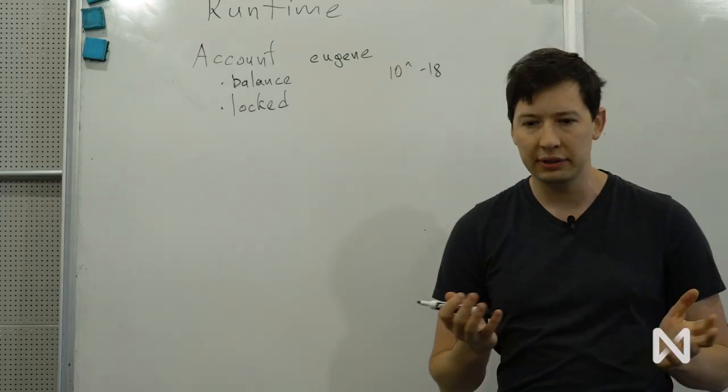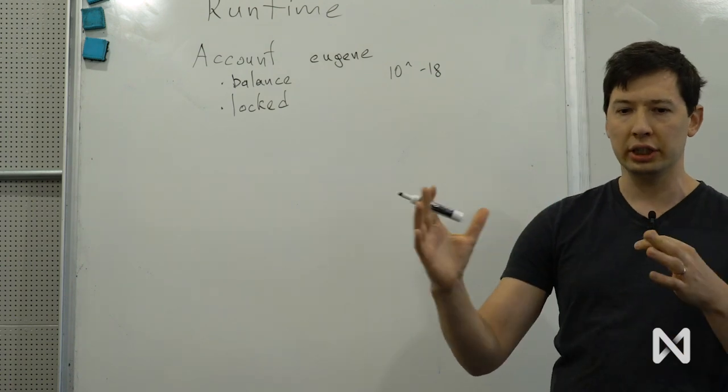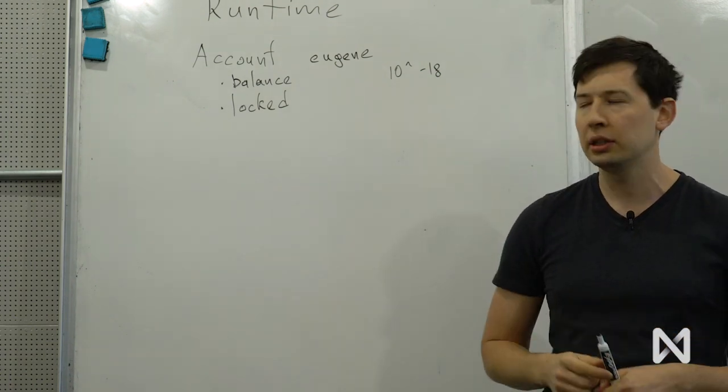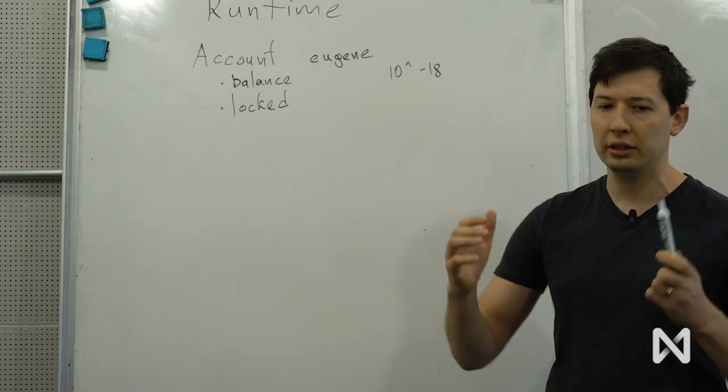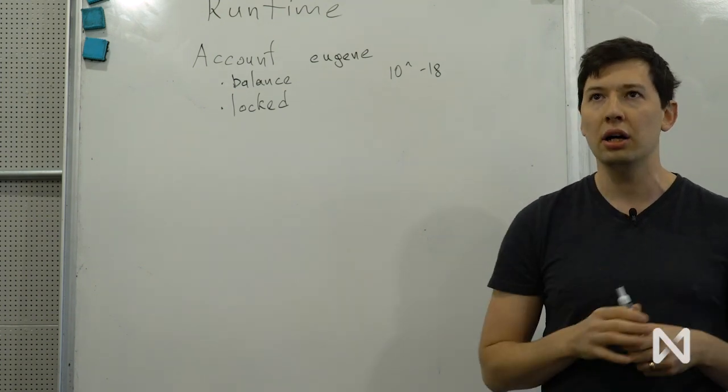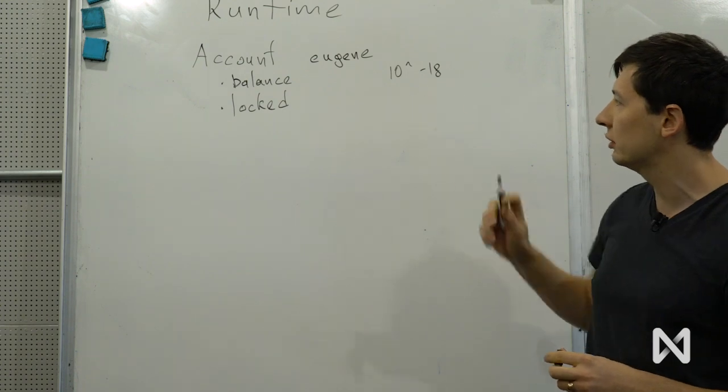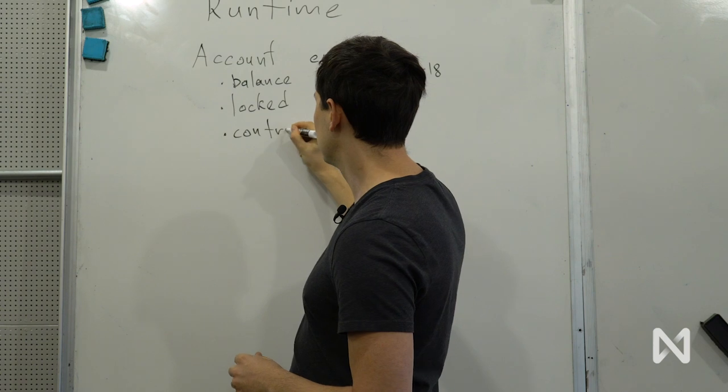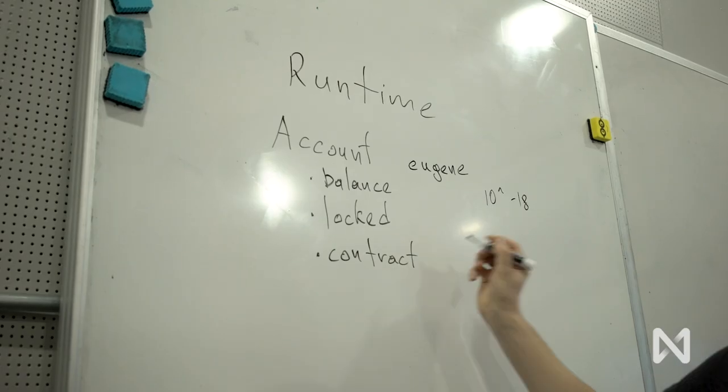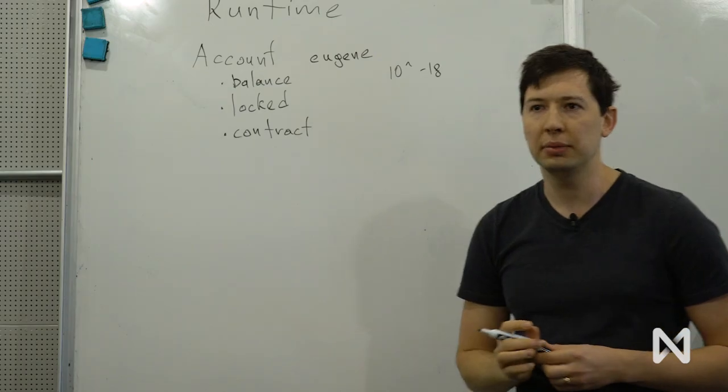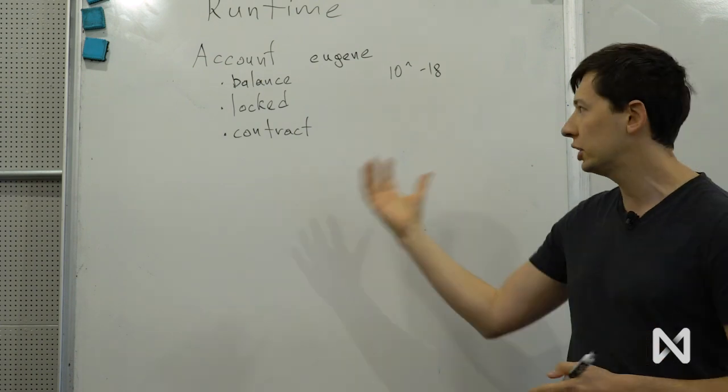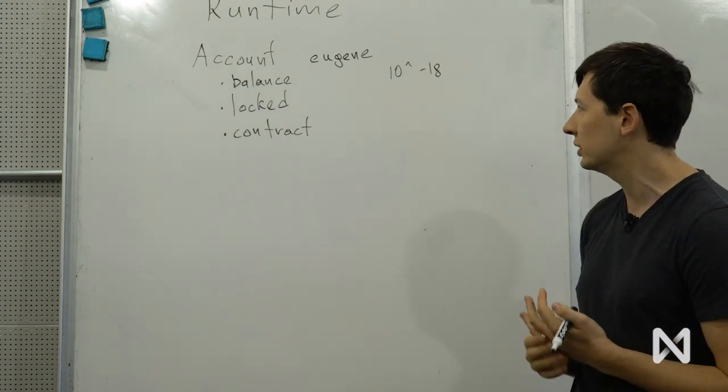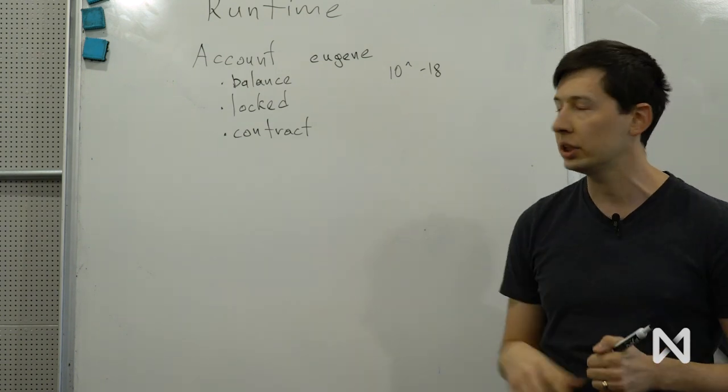Also on account, on every account, we may have a contract. This is a code, a contract, a smart contract that can act on your behalf, on behalf of the account. So you said on every account we have a contract, but we might have a contract. What do you mean by that? We might have it or might not have it. So by default, account doesn't have a contract. It's empty. But it also can have a single piece of code that we call account contract.